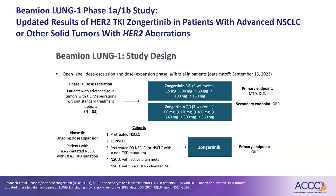Let's now look at zongertinib — a TKI, so a small molecule rather than an antibody drug conjugate. Small molecules achieve intracellular binding and are almost always oral. We'll look at the Beamion Lung 1 study, the phase 1A/1B study. Zongertinib, nicknamed Zongo, is a HER2 TKI that is the farthest along and probably the most effective so far. The study started as a phase 1 with dose expansion cohorts at several doses, including pretreated and first-line patients, patients with active brain metastases, and patients who had previously received a HER2 ADC — helping us understand whether sequencing these agents provides benefit.